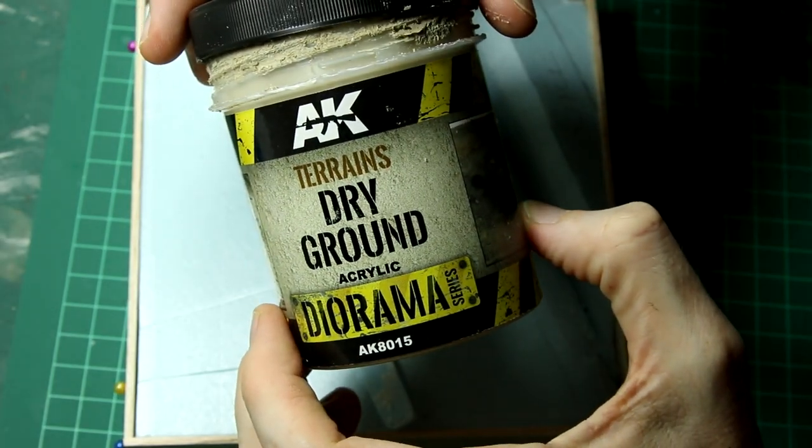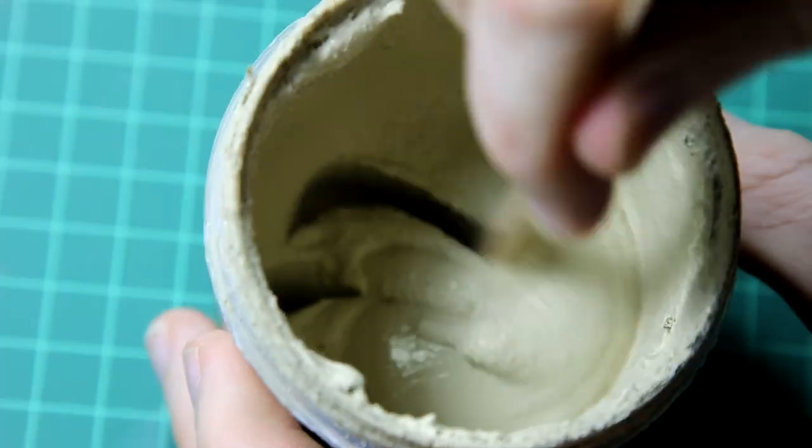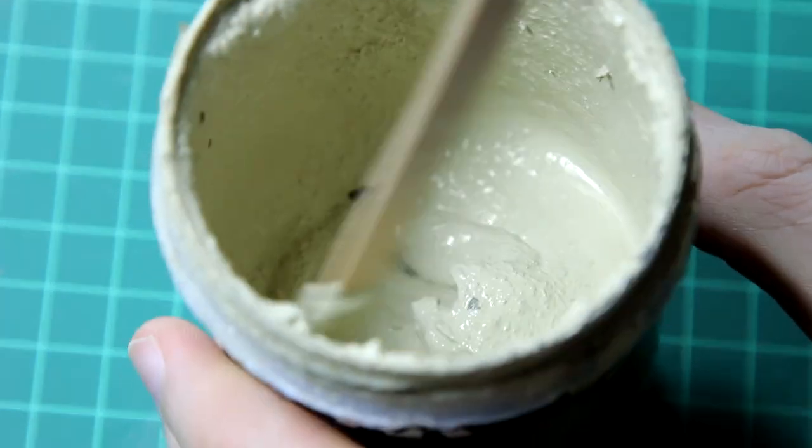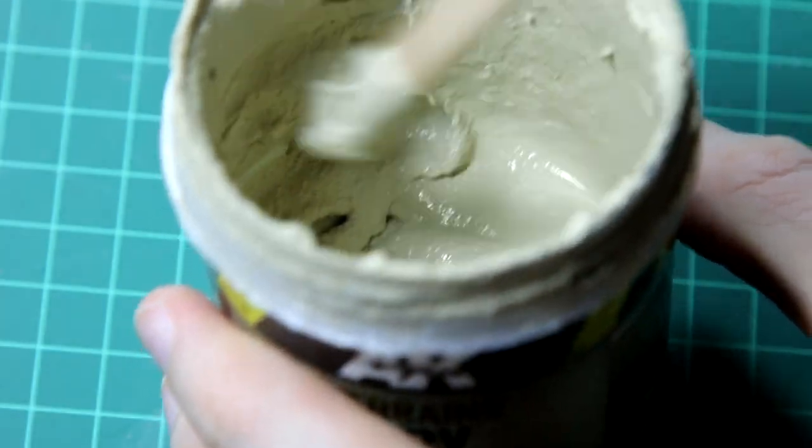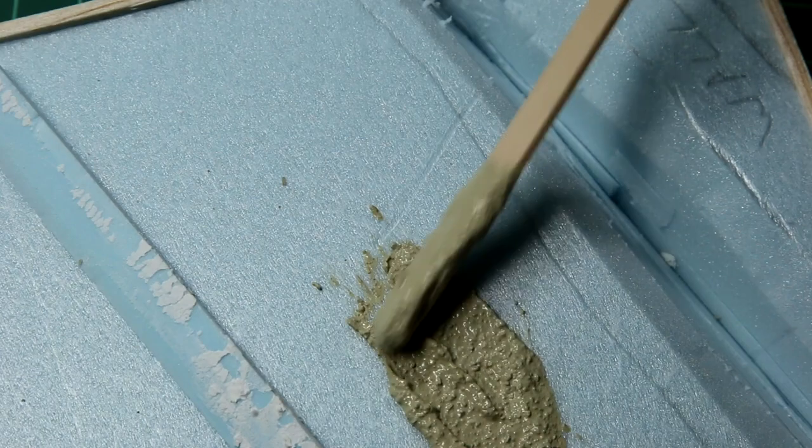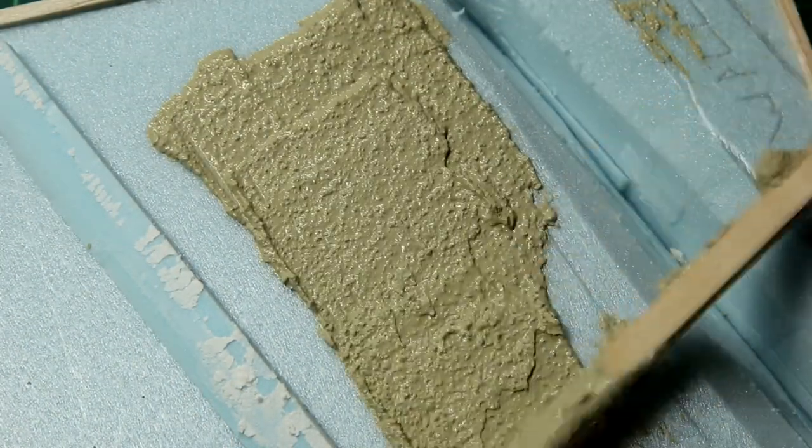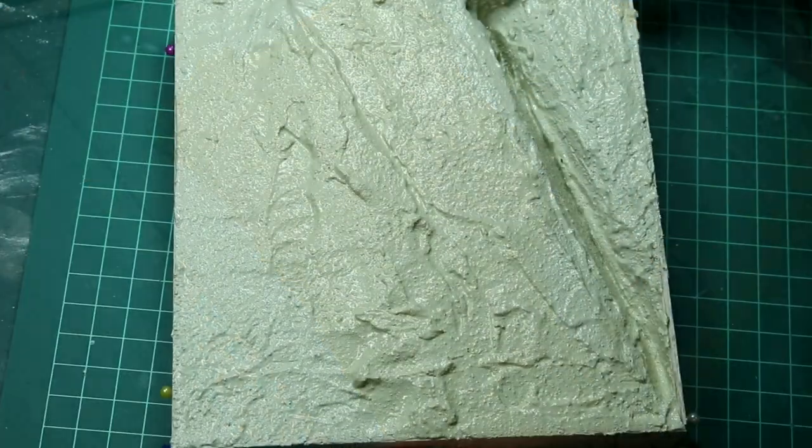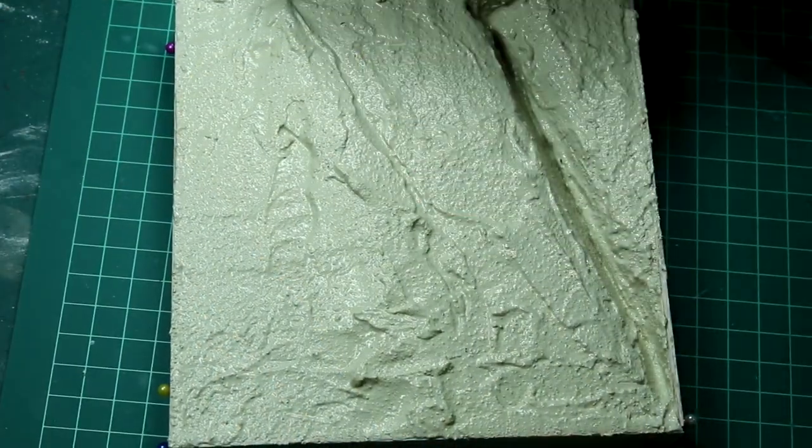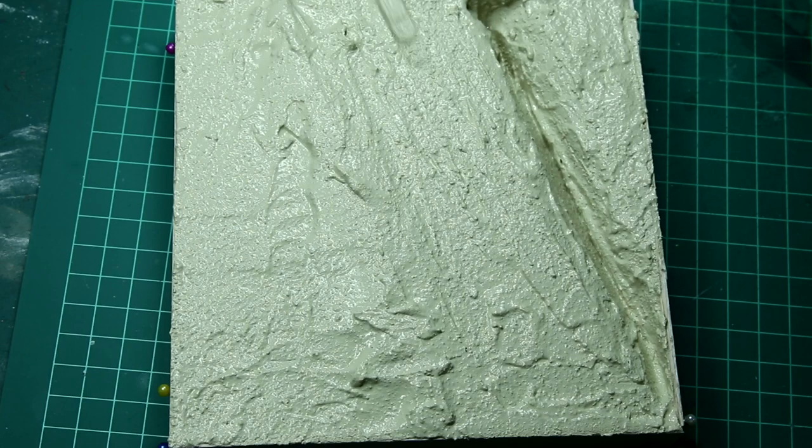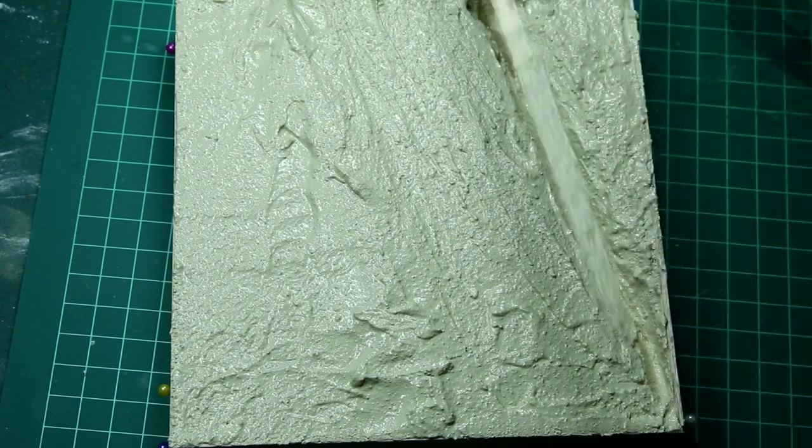If you've seen previous videos that I've made you'll know that I like to use this AK dry ground acrylic paste. It's a great mixture with a really nice texture and it goes a really long way. This small amount which is left will be more than enough for this diorama. At this point I'm not worried about the shape of the ground. And then once the base is covered I just drag in the direction that the vehicles will travel with the lollipop stick to make ruts and so on in the surface.